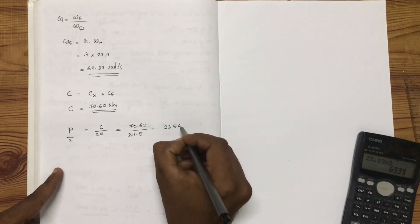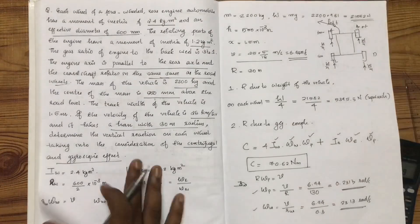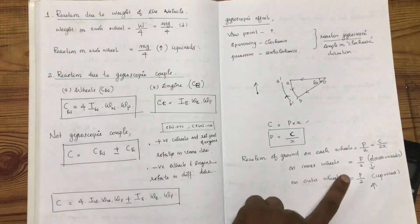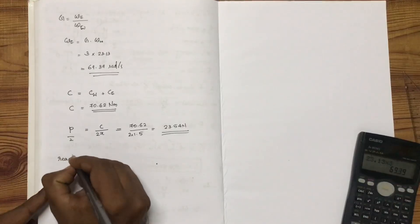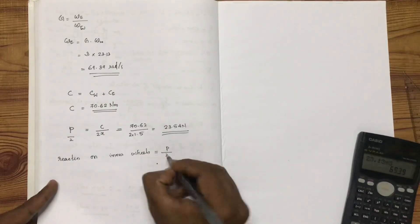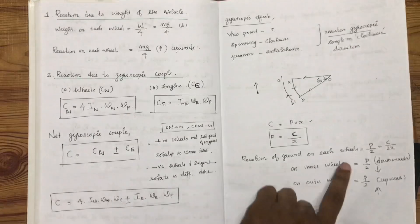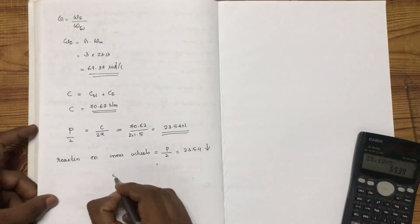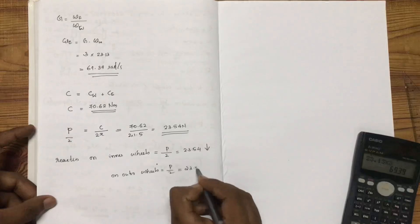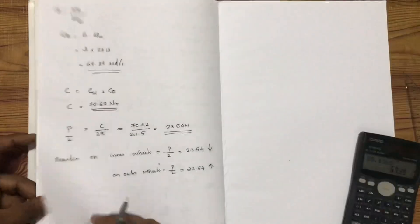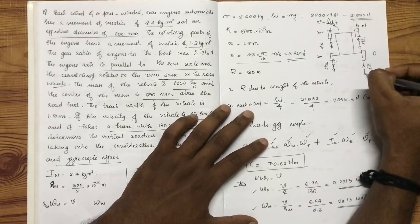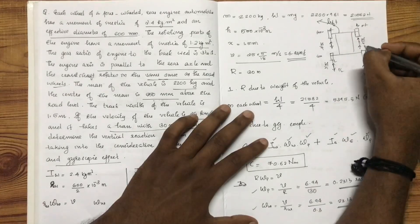The value of P by 2 is 23.54 N. For the inner wheels, P by 2 will be acting downwards, and for the outer wheels, P by 2 which is equal to 23.54 N will be acting upwards.